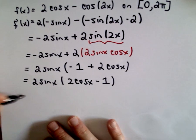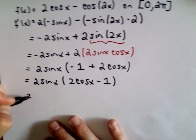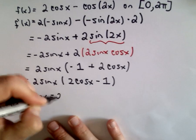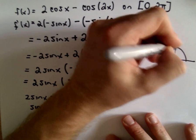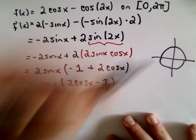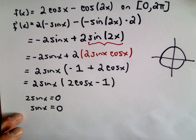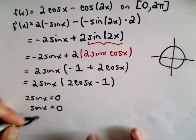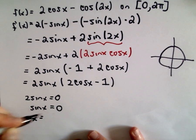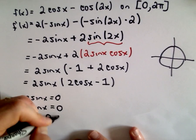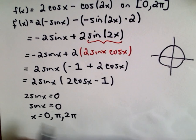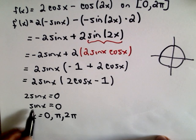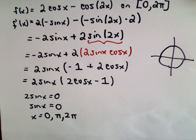If we set 2 sine x equal to 0, that just means we have to determine where sine of x equals 0. Thinking about the unit circle, sine represents the y-coordinate. So x is going to equal 0, pi, and 2pi. At 0, pi, and 2pi, sine of each of those values will be equal to 0.